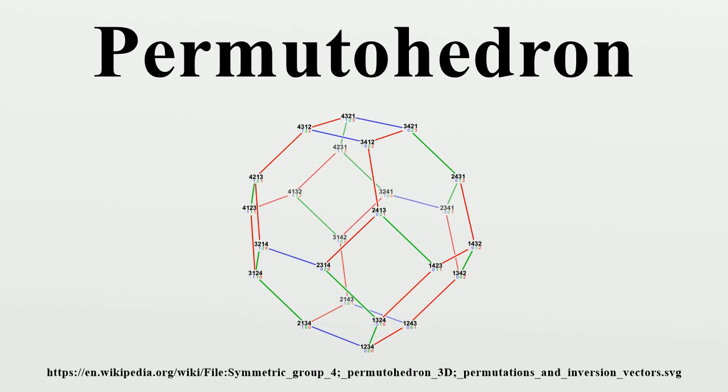In mathematics, the permutohedron of order n is an n-dimensional polytope embedded in an n-dimensional space, the vertices of which are formed by permuting the coordinates of a vector.